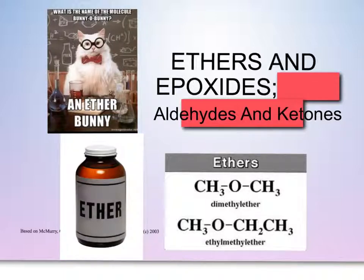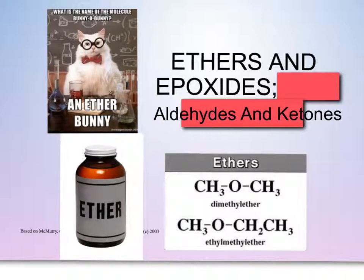An ether has two organic groups or alkyl groups that are bonded to the same oxygen, giving it a chain-oxygen-chain type of functional group. Ethers have a lower boiling point than alcohols, they cannot form hydrogen bonds with one another, and they are less dense than water so they will float on top of water.